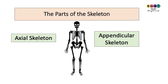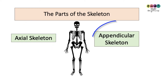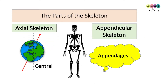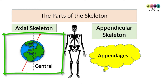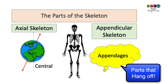The skeleton is divided into two parts: the axial skeleton and the appendicular skeleton. To remember them: think of axial meaning central — the Earth is rotating on its axis, going down the centre. The appendicular skeleton — think of appendages, things that hang off it.